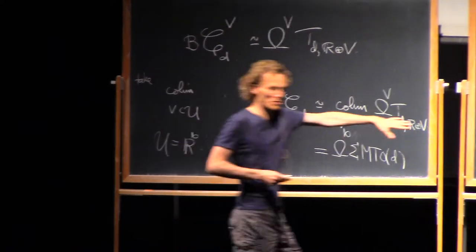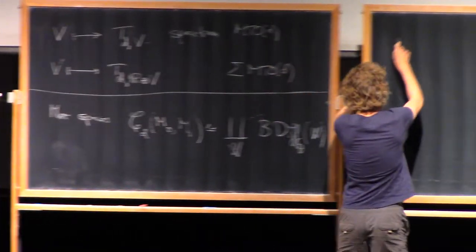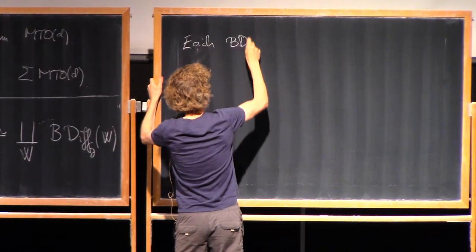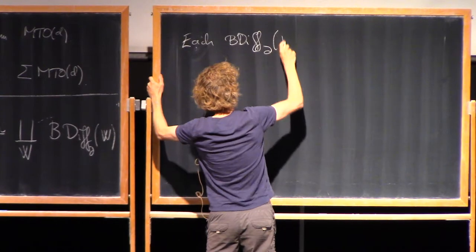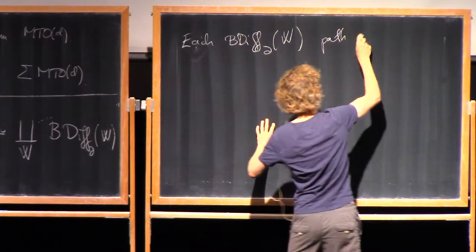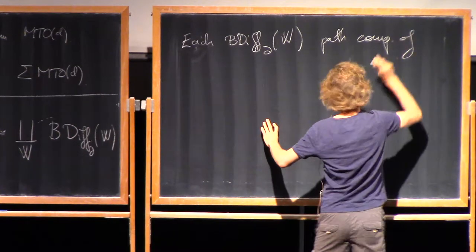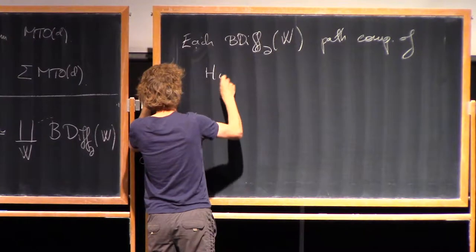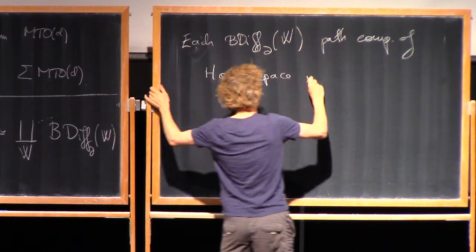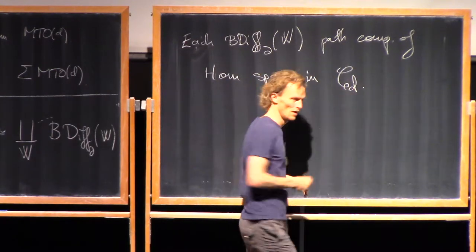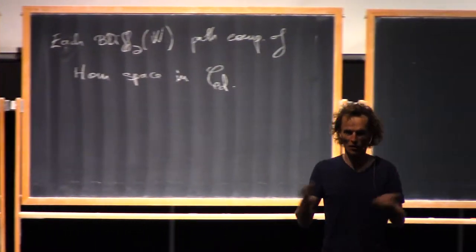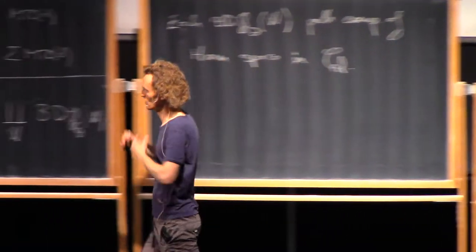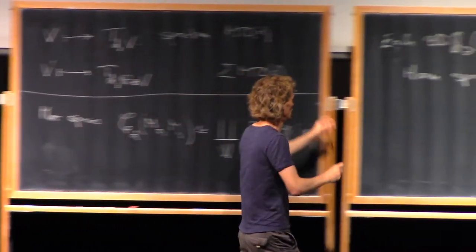maybe I'm even interested in a path component of a morphism space. So each Bdif boundary of W is a path component of a particular morphism space in Cd. Extracting information about a path component in a morphism space is a slightly awkward thing to do from knowing something about the classifying space.